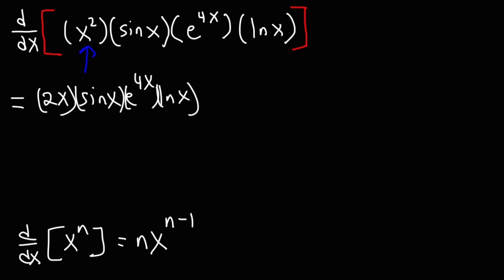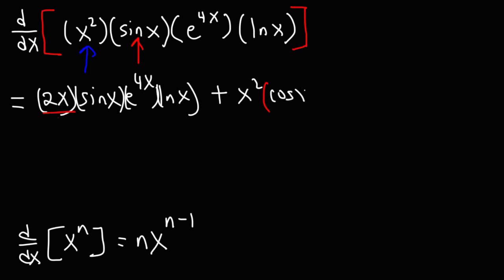Now let's move on to the next term. We're going to keep the first one the same — x squared — and then find the derivative of sine x, which is cosine x. The remaining two parts we leave the same: e to the 4x times the natural log of x.